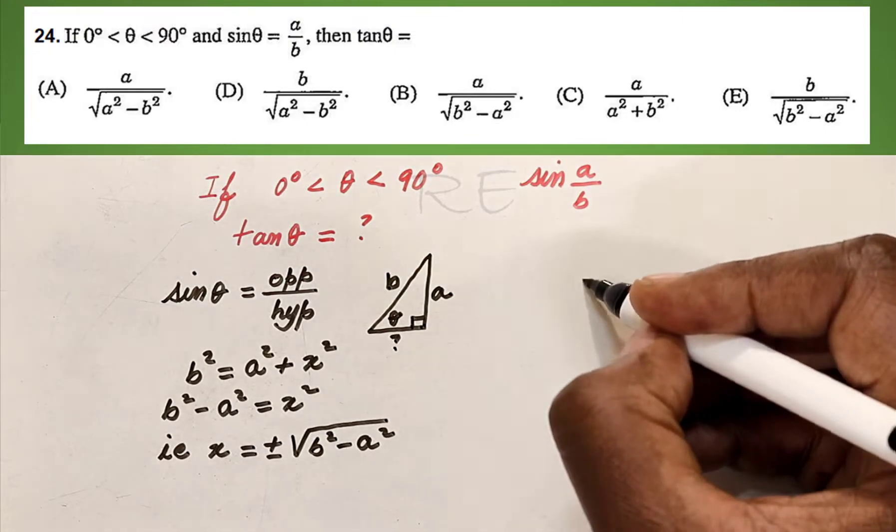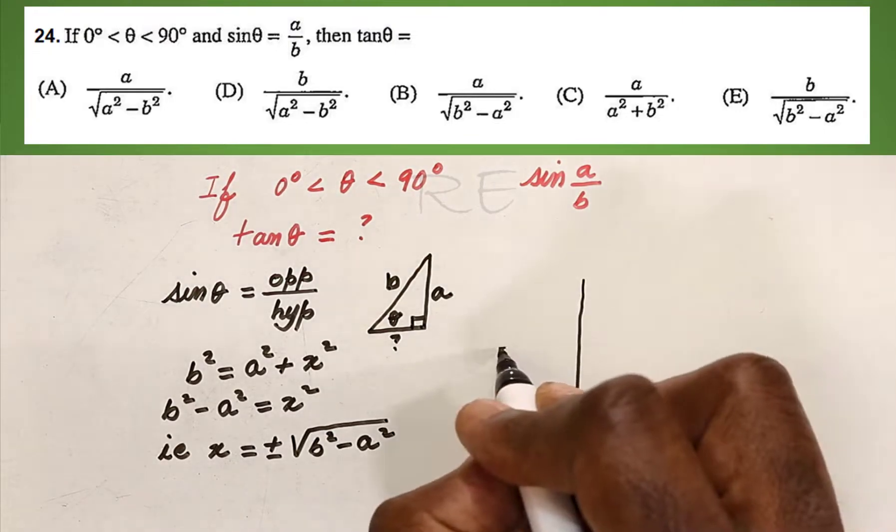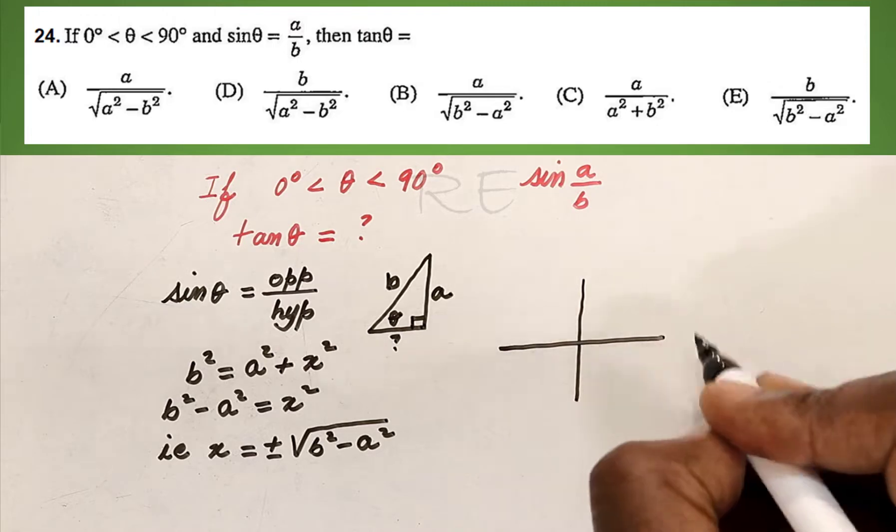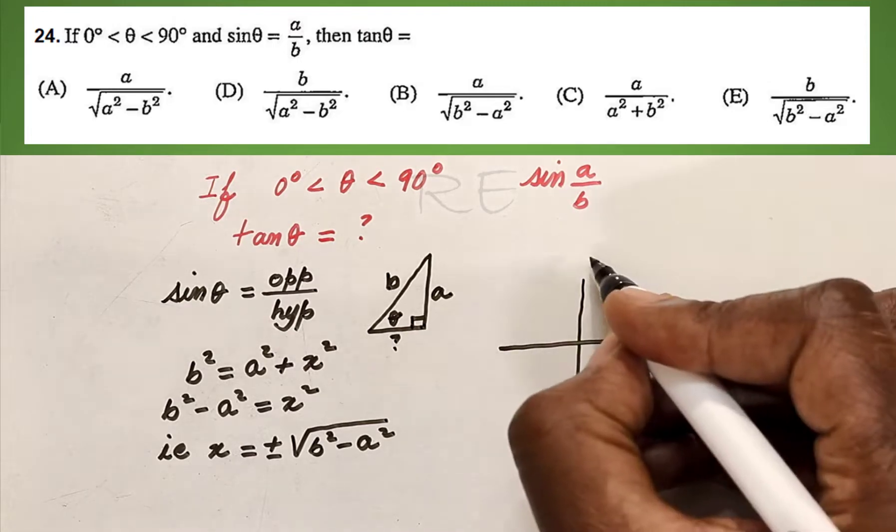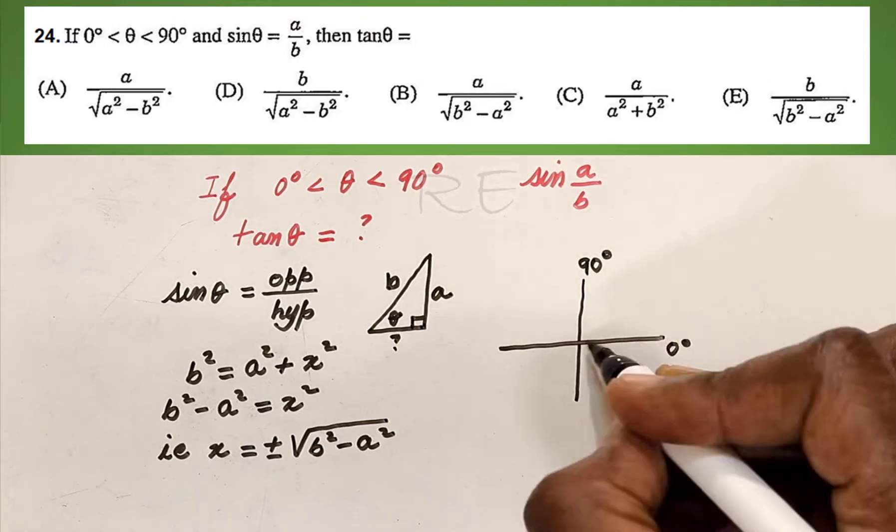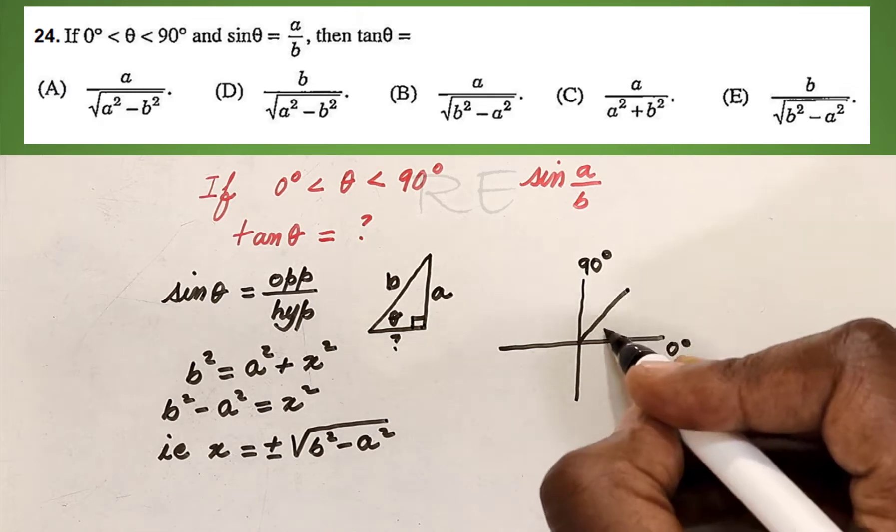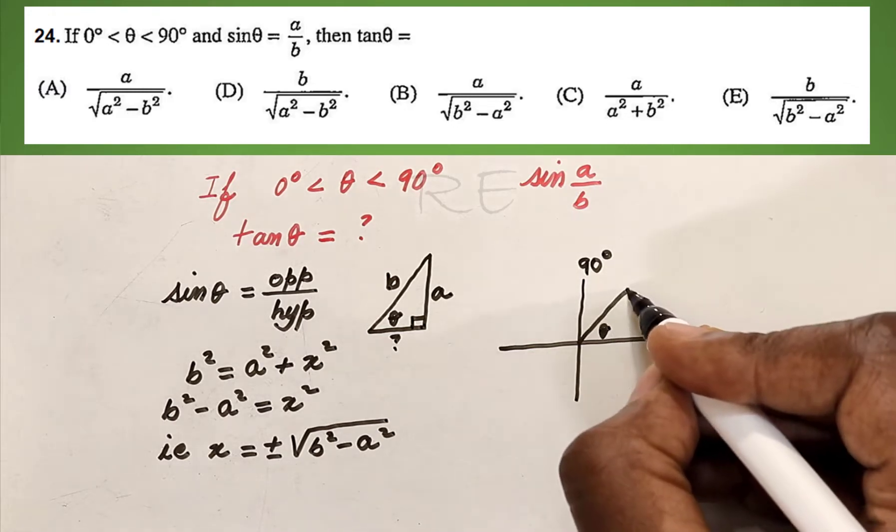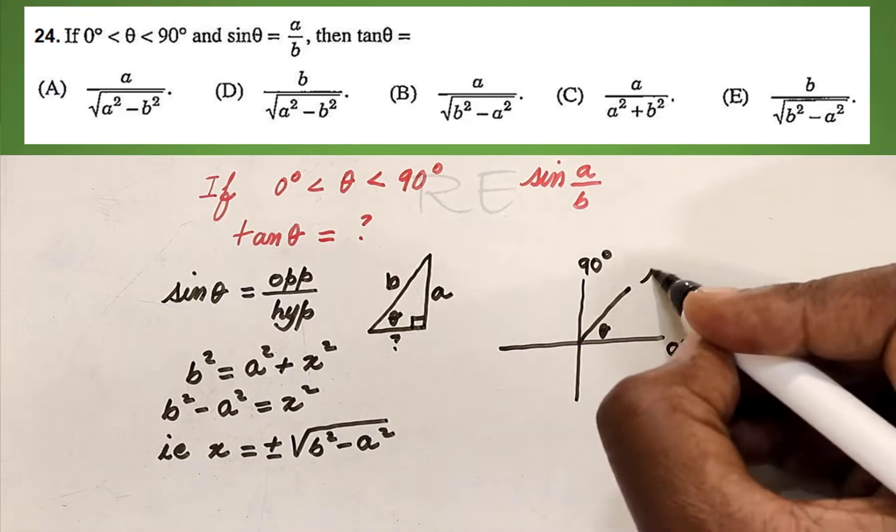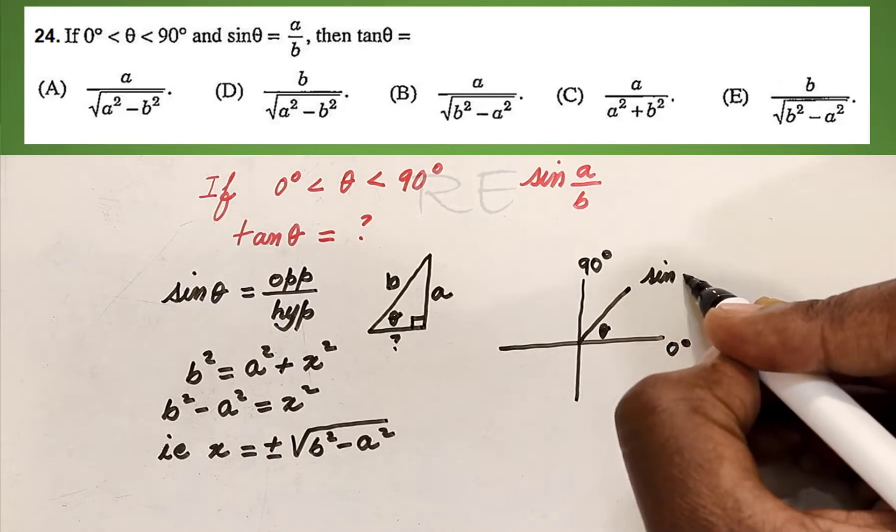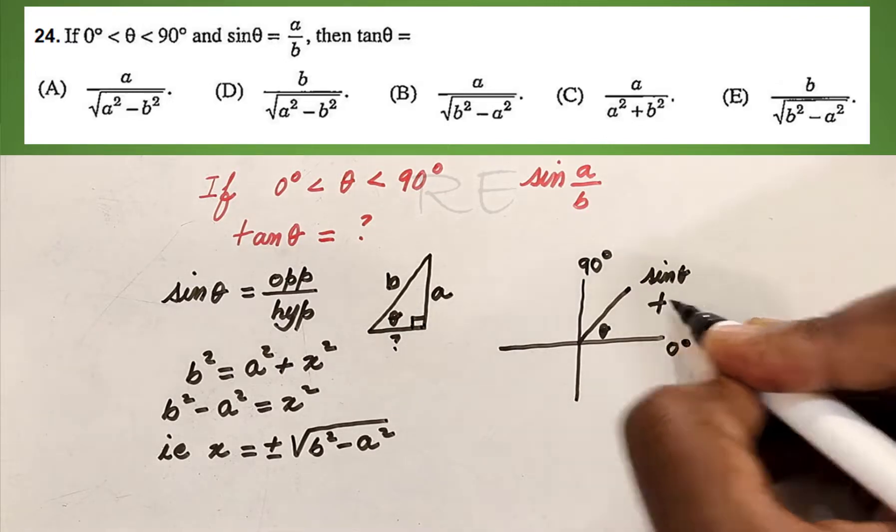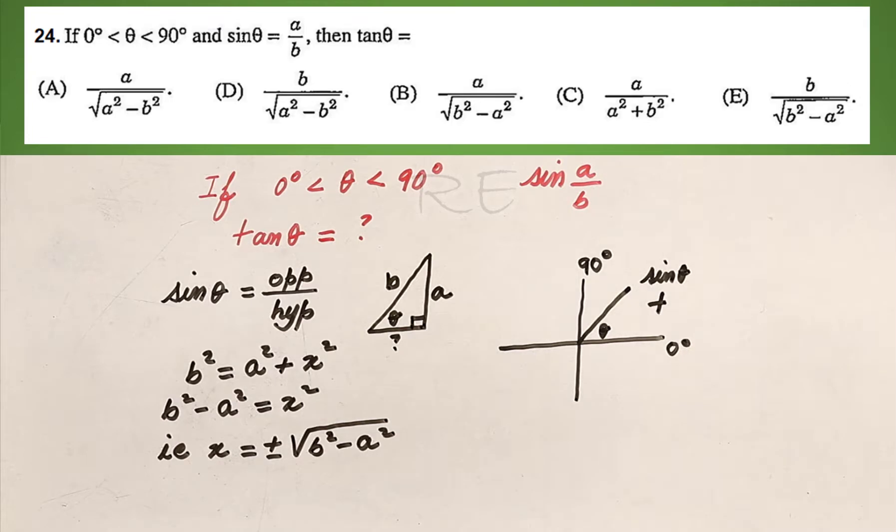Theta is between 0 degree and 90 degree, so theta is located in the first quadrant. And in the first quadrant, sine theta is positive.